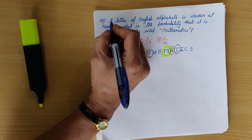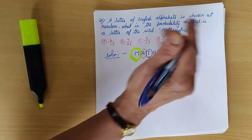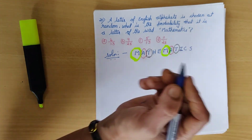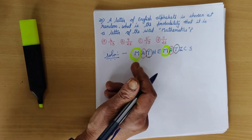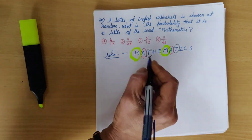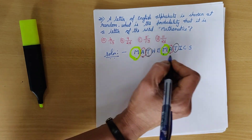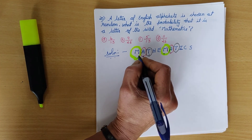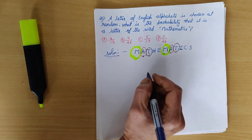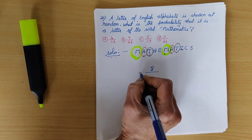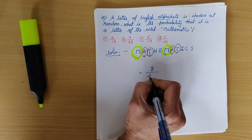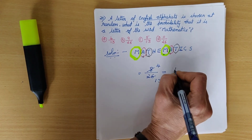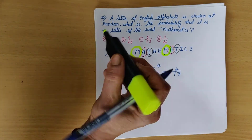Twentieth question: a letter of the English alphabet is chosen at random. What is the probability it is a letter of the word MATHEMATICS? The word has 11 letters but with repetitions removed (M, A, T repeated), there are 8 unique letters. Probability = 8/26 = 4/13. Correct option is A.